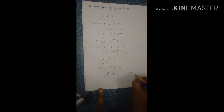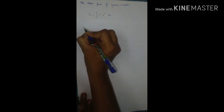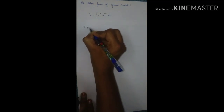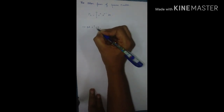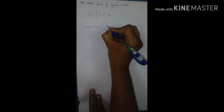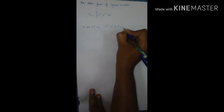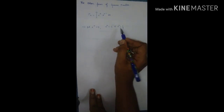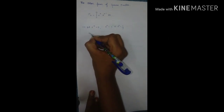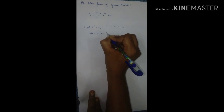This is the first form. Second form: put e to the power of minus x equal to y. So e to the power of x equals 1 by y, giving e to the power of x equals y inverse. Then, taking logarithm on both sides.